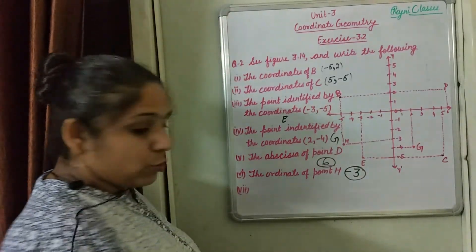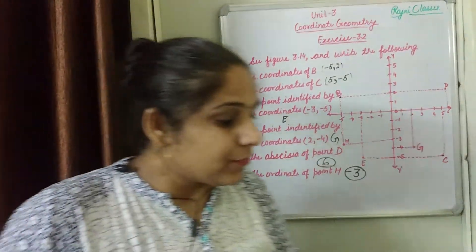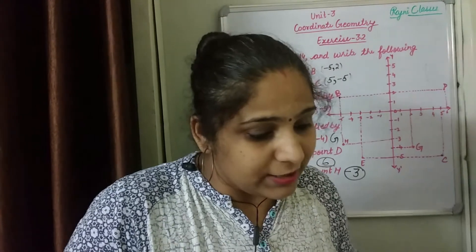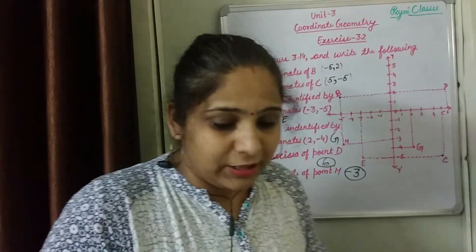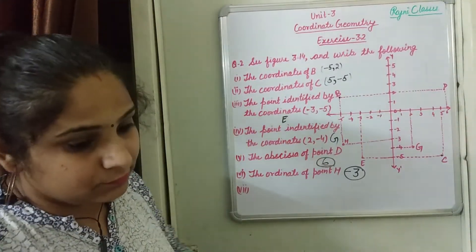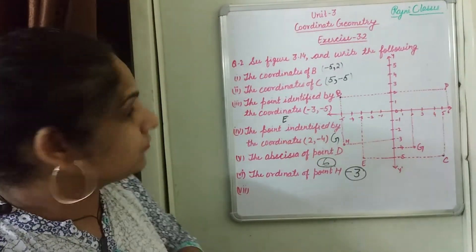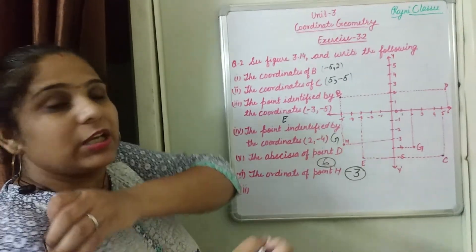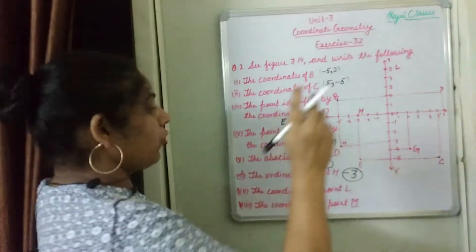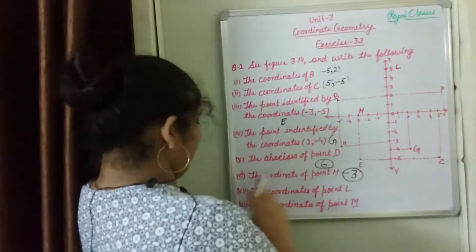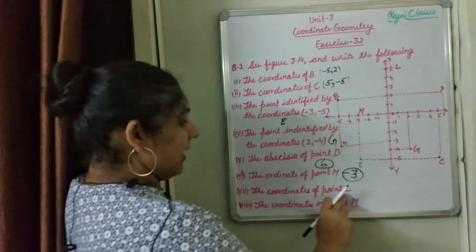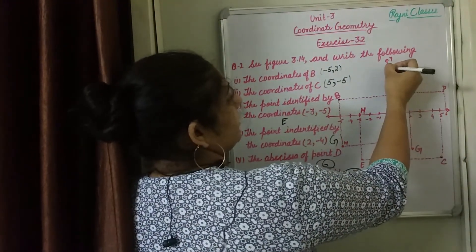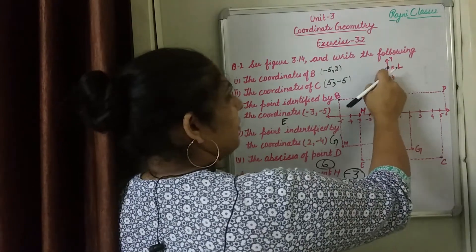Now the seventh part — the coordinates of point L. We haven't marked point L yet. The coordinates of point L: it is on the Y axis at 5.